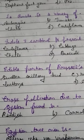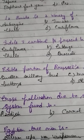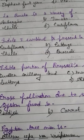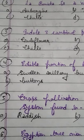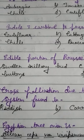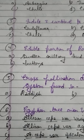Broccoli is Brassica oleracea var. italica. Its origin is Italy. It contains sulforaphane, which is responsible for its anti-cancerous property. The correct answer to question 3 is cabbage — Indole-3-Carbinol is present in cabbage and is responsible for the anti-cancerous property of cabbage.